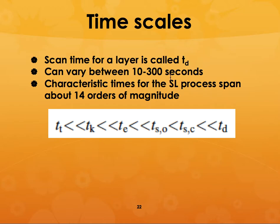There are many different factors involved. For a particular layer, the scan time — called t_d — can vary between 10 to 300 seconds, and depending upon the stereolithography process and the resin system, these timescales can vary by about 14 orders of magnitude.